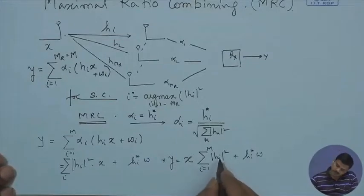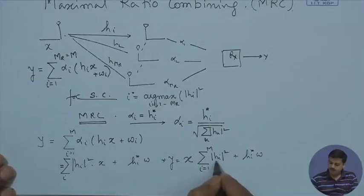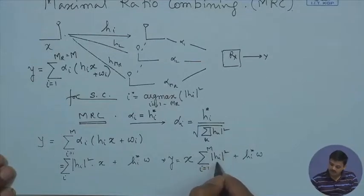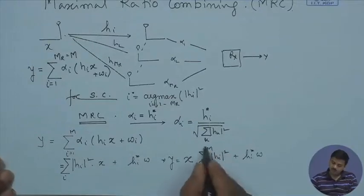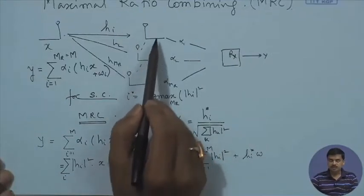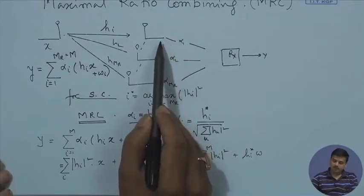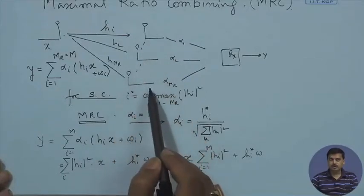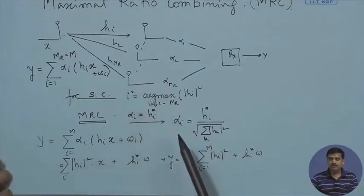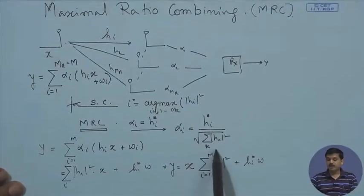At the receiver, what we have is the sum of all the channel coefficients squared. Each channel gain is weighted, and when adding up the signal we are weighting it by the corresponding channel strength. In the previous case there would have been only one channel gain, but here we get addition over all possible channel links. Compared to selection combining — where although we had all these branches, only one was taken and the others dropped — here all branches are being used in such a way that the signal-to-noise ratio is maximized.